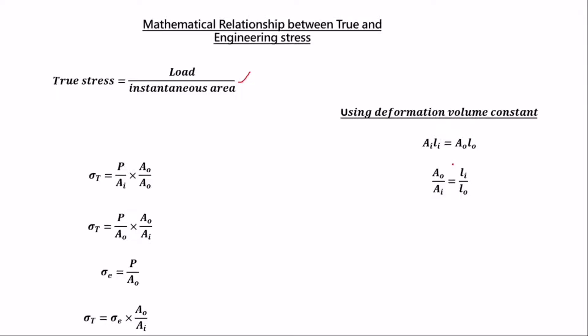Now, using the deformation volume constant: the instantaneous area times the instantaneous length equals the original area times the original length (A_i × L_i = A₀ × L₀). From this, we make A₀/A_i the subject, which gives us that the original area over the instantaneous area equals the instantaneous length over the original length (A₀/A_i = L_i/L₀). We then replace A₀/A_i with L_i/L₀.